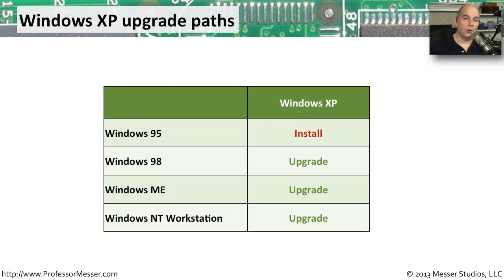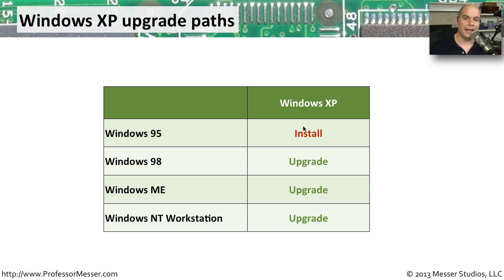If you're upgrading from an older operating system to Windows XP, there are some operating systems that allow you to do an in-place upgrade, while others may require that you perform a clean install. For example, if you're moving from Windows 95 to Windows XP, there's no upgrade path — you can't perform an in-place upgrade; you have to do a full clean install. If you're upgrading from Windows 98, Windows ME, or Windows NT Workstation, there are upgrade paths that will keep all of your files and applications in place, and you can perform an in-place upgrade.